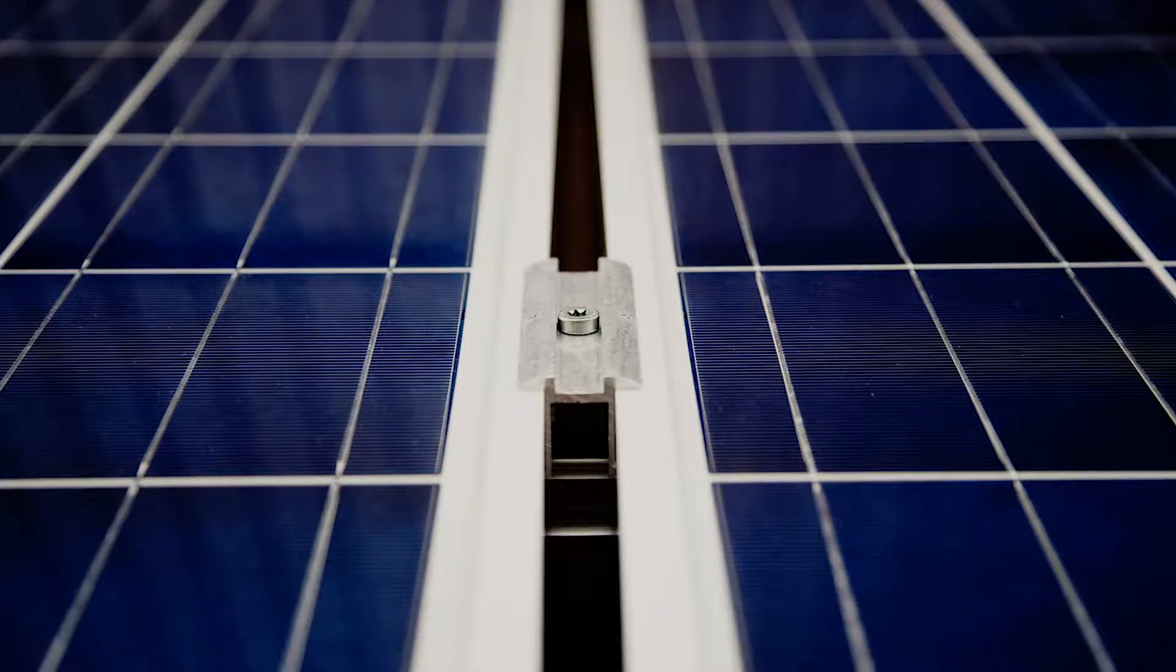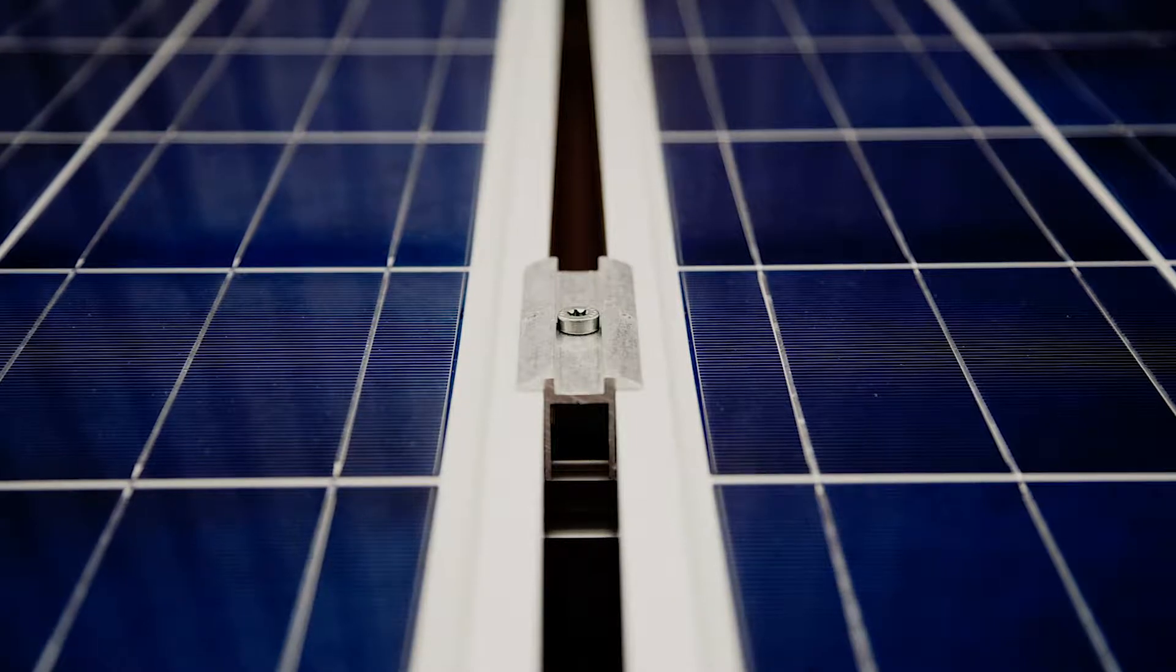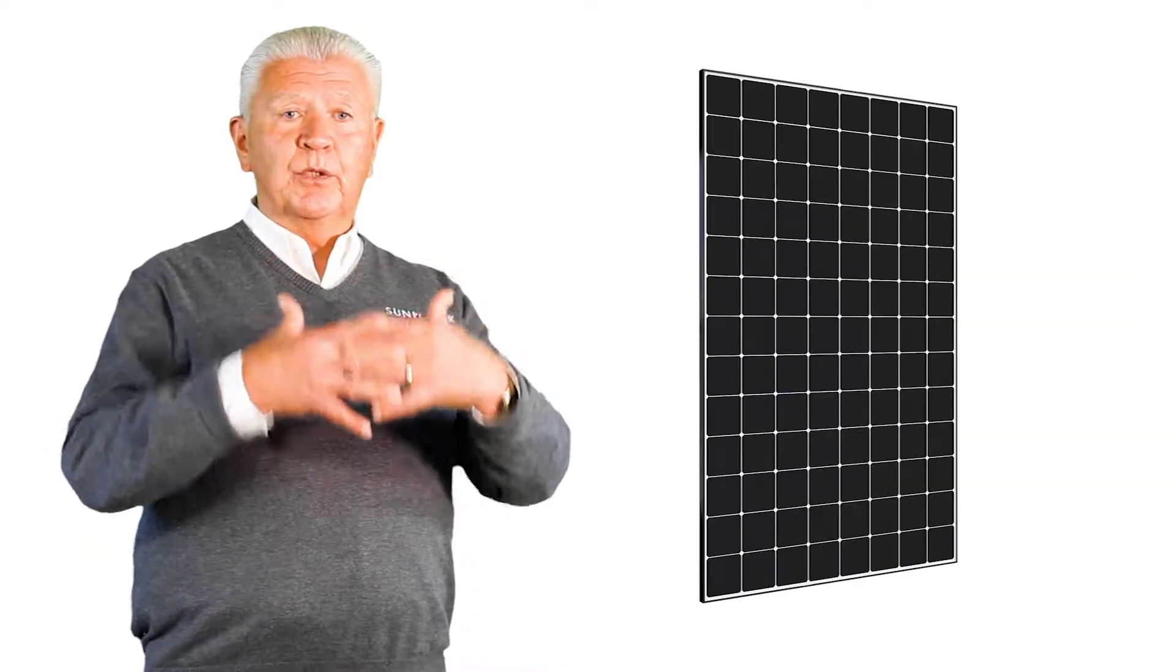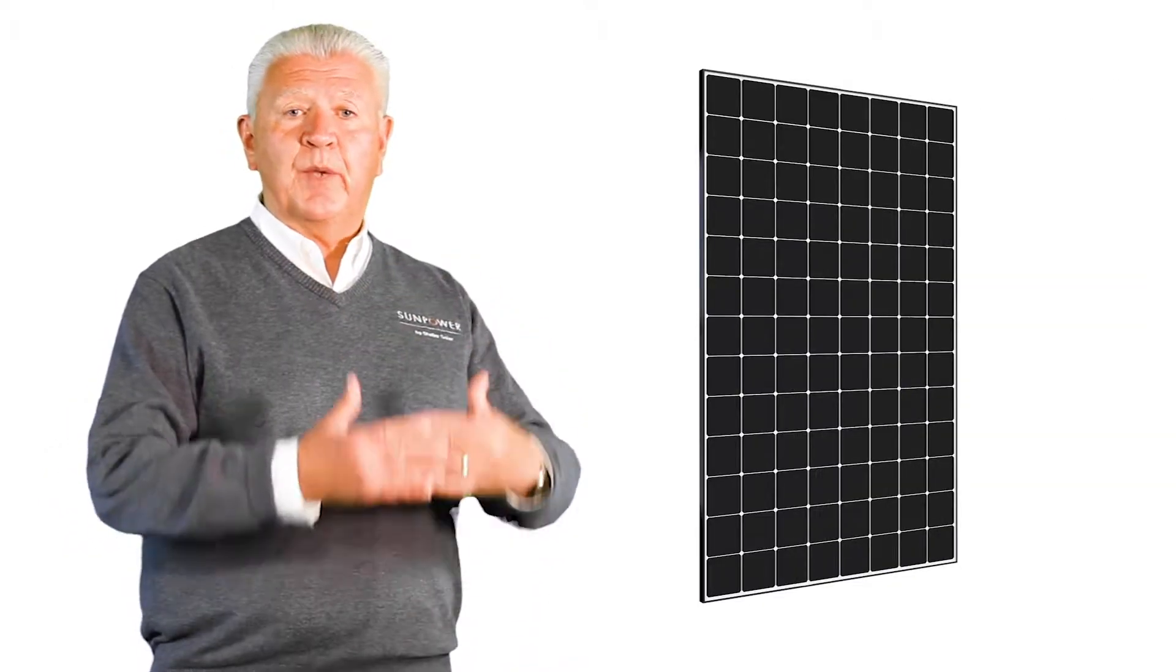But as the industry matured and the companies listened to what customers were looking for, the first thing that happened is that the blue switched to a black glass panel, and secondly the frames, instead of being silver, now became black because they fit better on the rooftop and they didn't show quite so much.